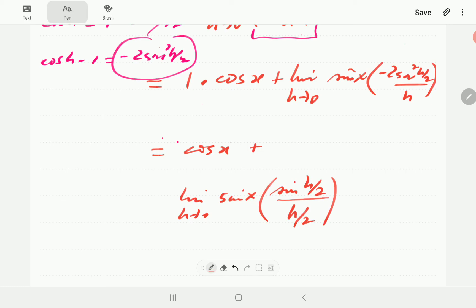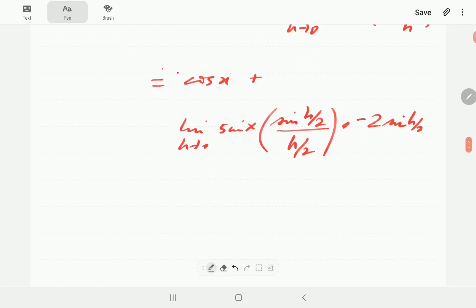So, but that's just one of the sine terms here. We've got two of them, because it's sine squared. And then the other one is just going to be negative 2 sine h over 2.